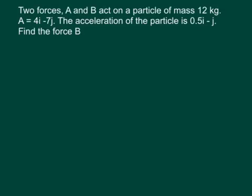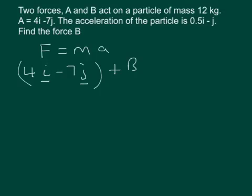So to do this, we're going to use Newton's second law, F equals MA. So the resultant force is 4I minus 7J plus B, whatever B is. B is a vector, and it's equal to the mass multiplied by the acceleration.